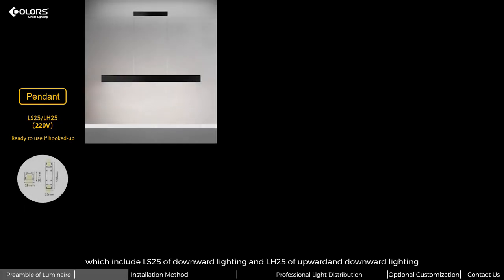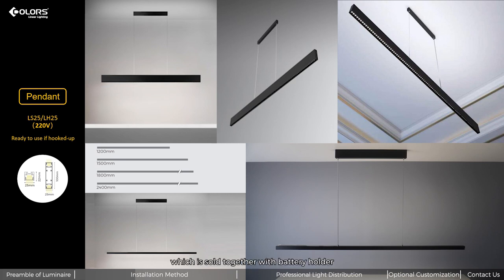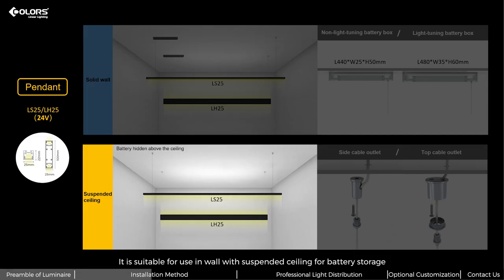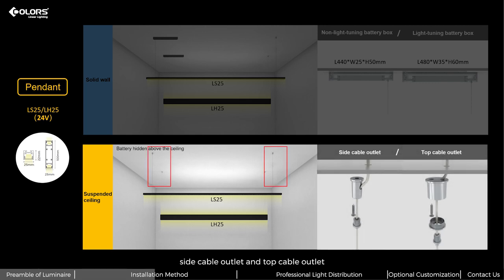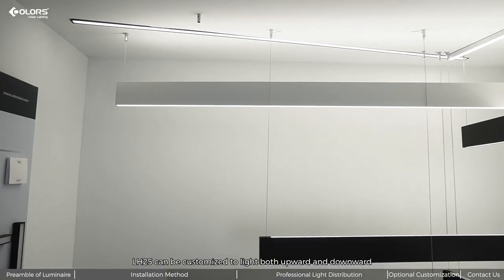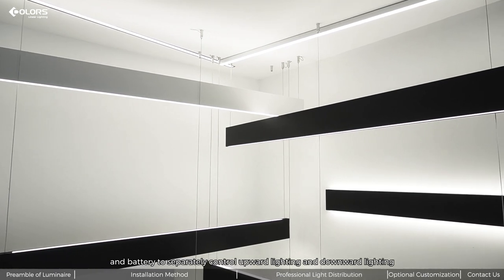Second, pendant type, which includes LS25 of downward lighting and LH25 of upward and downward lighting. Both can divide into two types. One is 220-volt, which is sold together with driver holder. The other is 24-volt for using solid walls with non-light tuning and light tuning drivers optional. It's suitable for using wall with suspended ceiling for driver storage. There are two options: side cable outlet and top cable outlet for choice as per your expected installation effects. The most stunning part is the concisely designed 2-in-1 pendant cable, of which one is for power. The other one is for anchor use. You can adjust the cable up to 2 meters long at most. LH25 can be customized to light both upward and downward, but you need to buy one more cable and driver to separate control upward lighting and downward lighting.